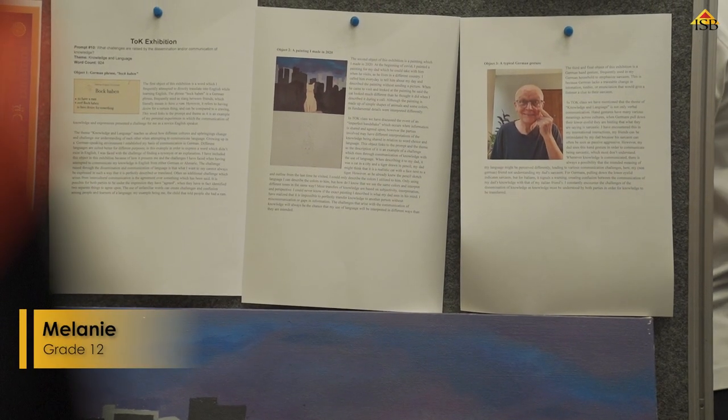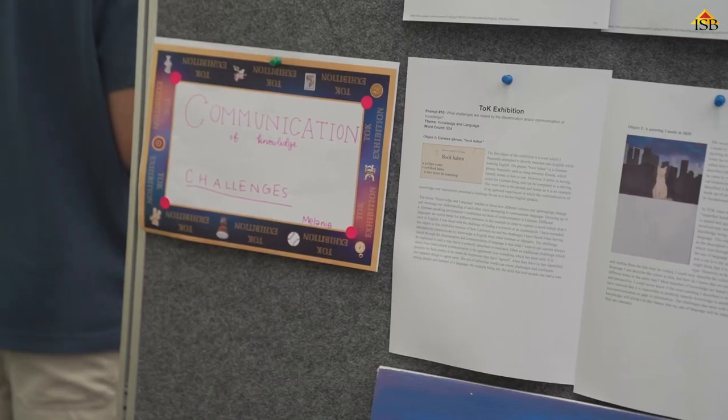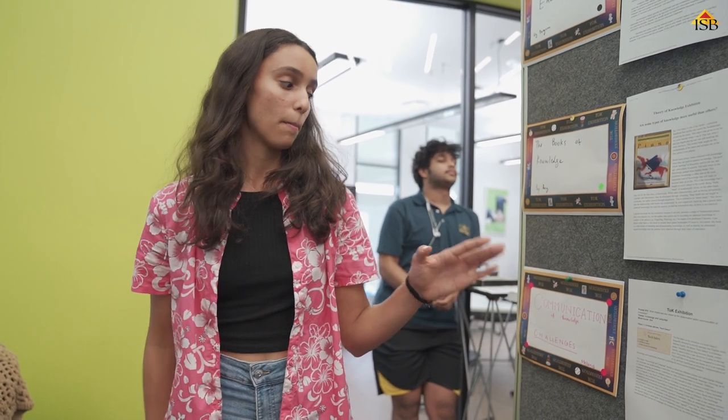My first object was a German word which I find hard to translate. My second object was a painting which is hard to describe if not seen and interpreted properly. And the last one is a German gesture which my dad uses a lot. Each of my objects relates to things such as culture, struggling to communicate, and struggling to translate things growing up. My entire TOK is related to the prompt that communication is flawed, and I explored why communication is flawed and in what ways that affects different sections of life.